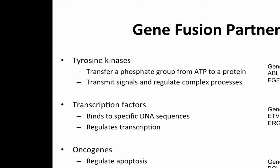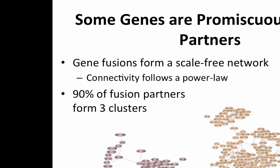Looking at the partners commonly forming gene fusions, we see a few different classes: tyrosine kinases are quite common, transcription factors are another common class, and generally oncogenes that are normally tightly regulated but become up-regulated because of a gene fusion. If we map out the connections between genes — creating a network connected by edges where two genes that have formed a gene fusion are connected — they form a scale-free network. This tells us that a few genes are very promiscuous, forming fusions with a large number of partners, while the majority of genes have only one or two partners.